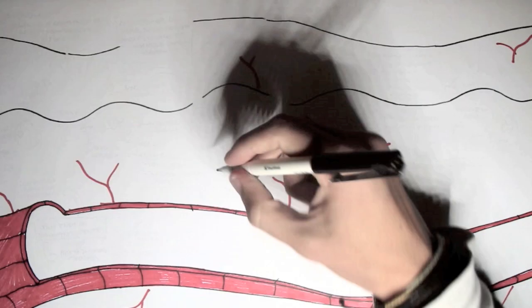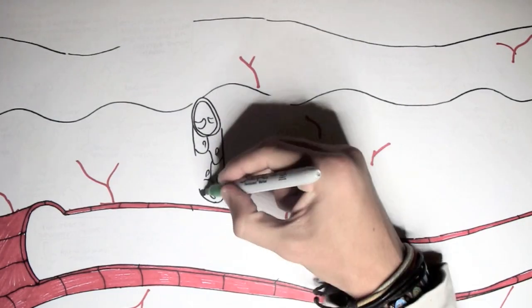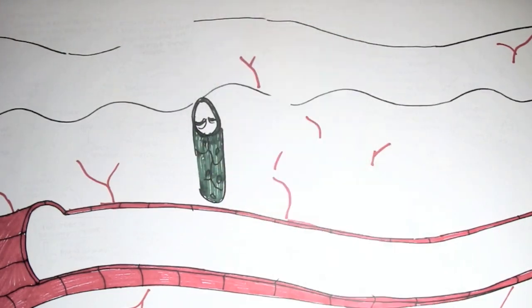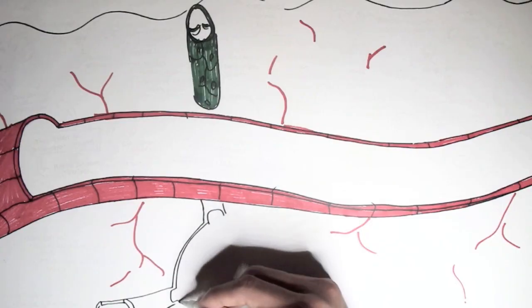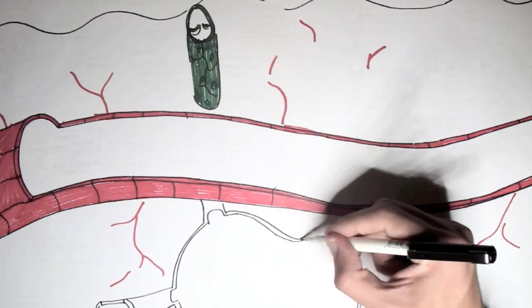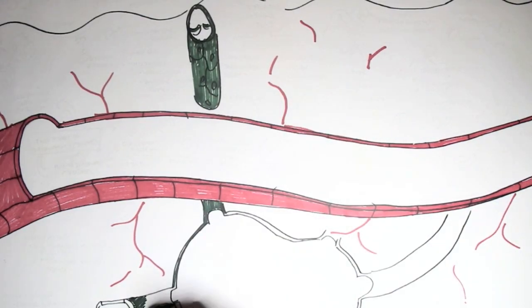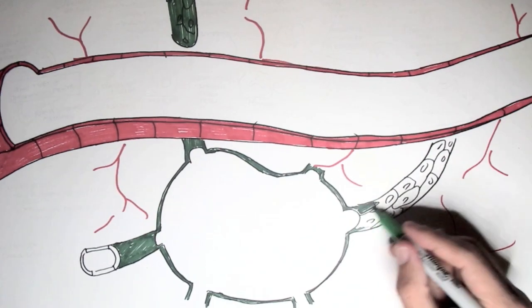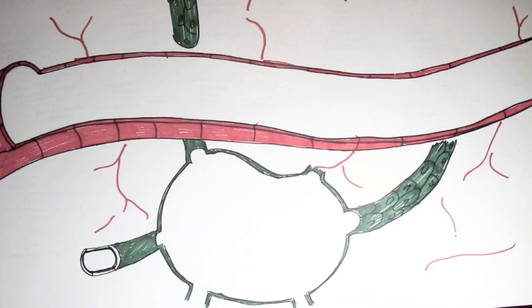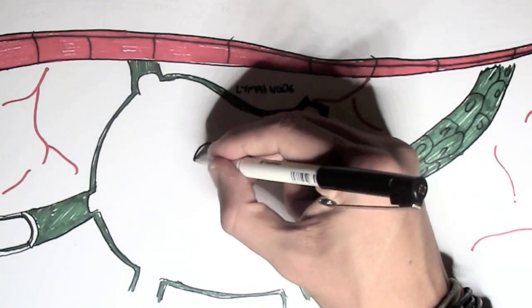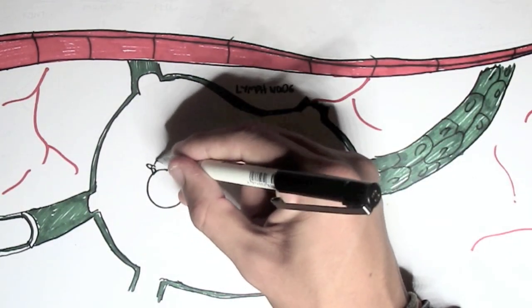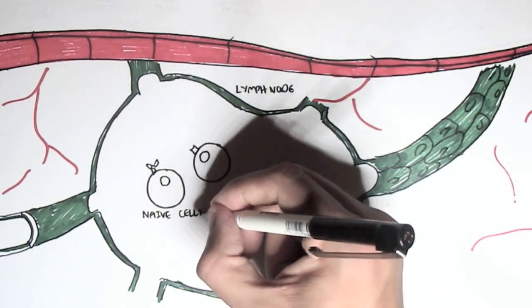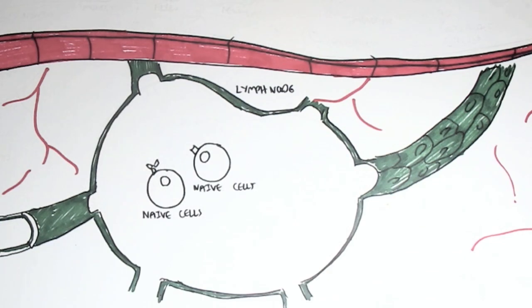And then we also have lymphatic vessels here, which are important for immune cells to move around in, particularly the lymphocytes. The lymph vessels all connect to what's called a lymph node or other organs such as a spleen. Within the lymph node, if there is no infection or infiltration or inflammation, we have the naive cells, naive lymphocytes, known as the B and T cells.